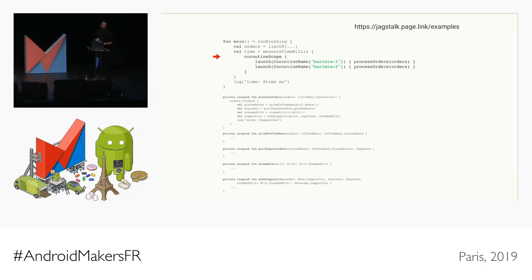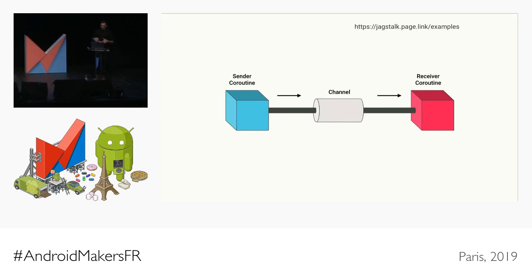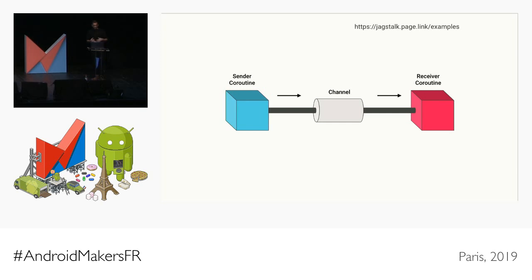What we need is for the two baristas to somehow communicate with the cashier. To perform communication between coroutines, we can accomplish that using channels. With threads we had to share memory; with channels the concept is to communicate between coroutines using message passing — channels are what facilitate that message passing. As long as your message is immutable, you're in good shape. Let me go through how channels work before going back to the application.